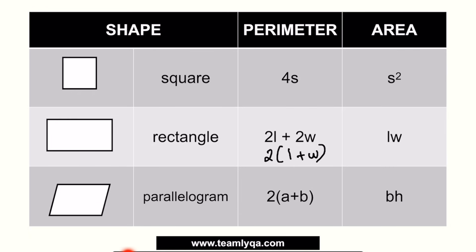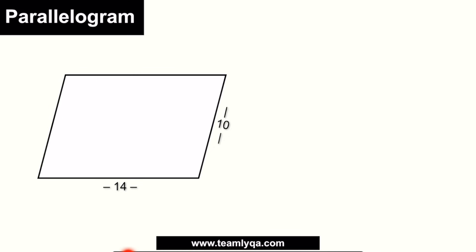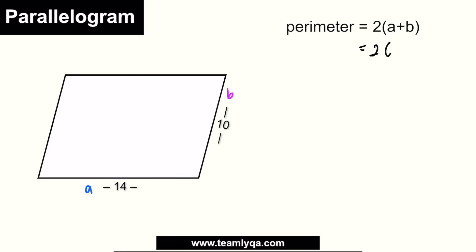Tignan natin itong shape na ito. Kung hahanapin natin yung perimeter, gagamitin lang natin yung formula na 2 times the quantity A plus B. We can take one of the sides as A — pwedeng ito — tapos ito naman yung ating B. Yung 10. So isa-substitute lang natin sa formula: 2 times the quantity 14 plus 10. This is 2 times 24, or 48 units. Yung units na yan, depende na sa problem — centimeter, meter, inch — tingnan ninyo kung may provided. Kung wala, it's just 48 units.